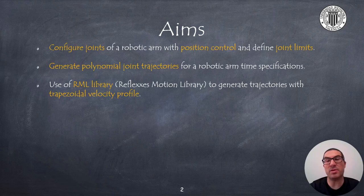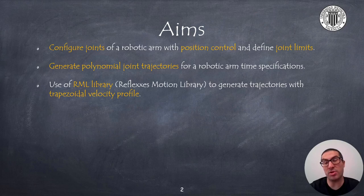The aims of the presentation are to explain how to configure joints of a robot arm to perform position control and set joint limits. The main goal is to explain how to generate a polynomial trajectory for robot joints with time specifications and to control them by evaluating the reference trajectory point at every time instant.